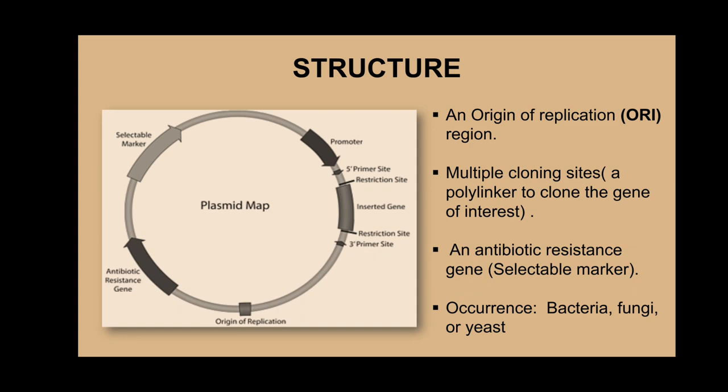Plasmids usually occur in bacteria such as E. coli and in fungi or yeast such as Saccharomyces cerevisiae.